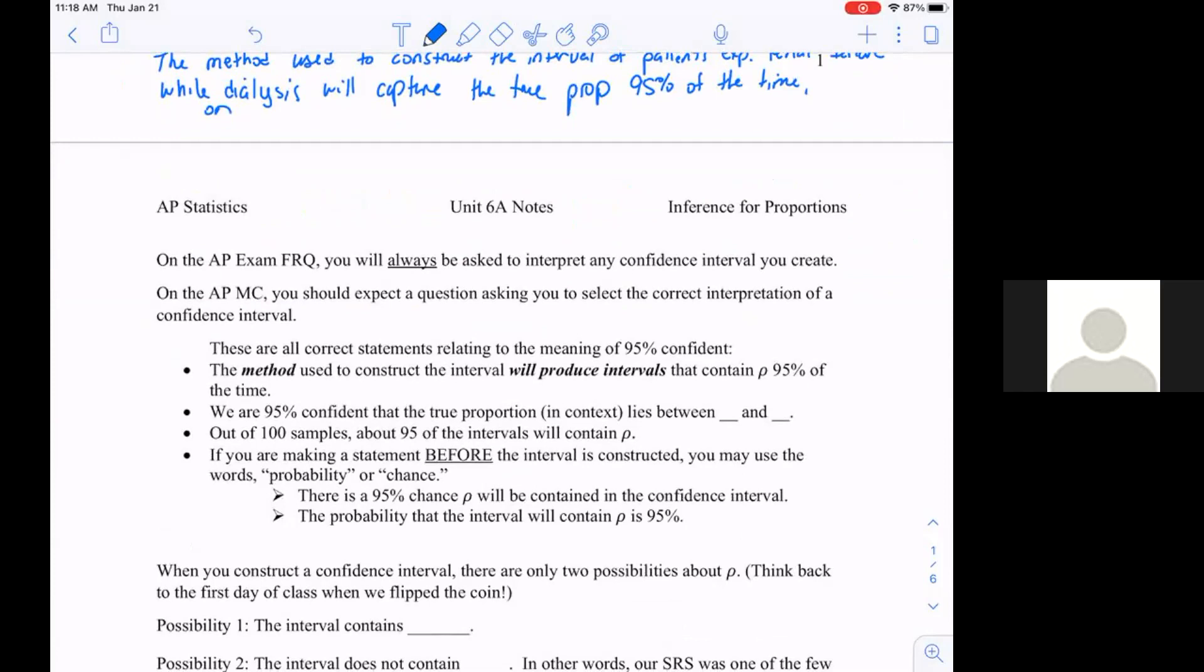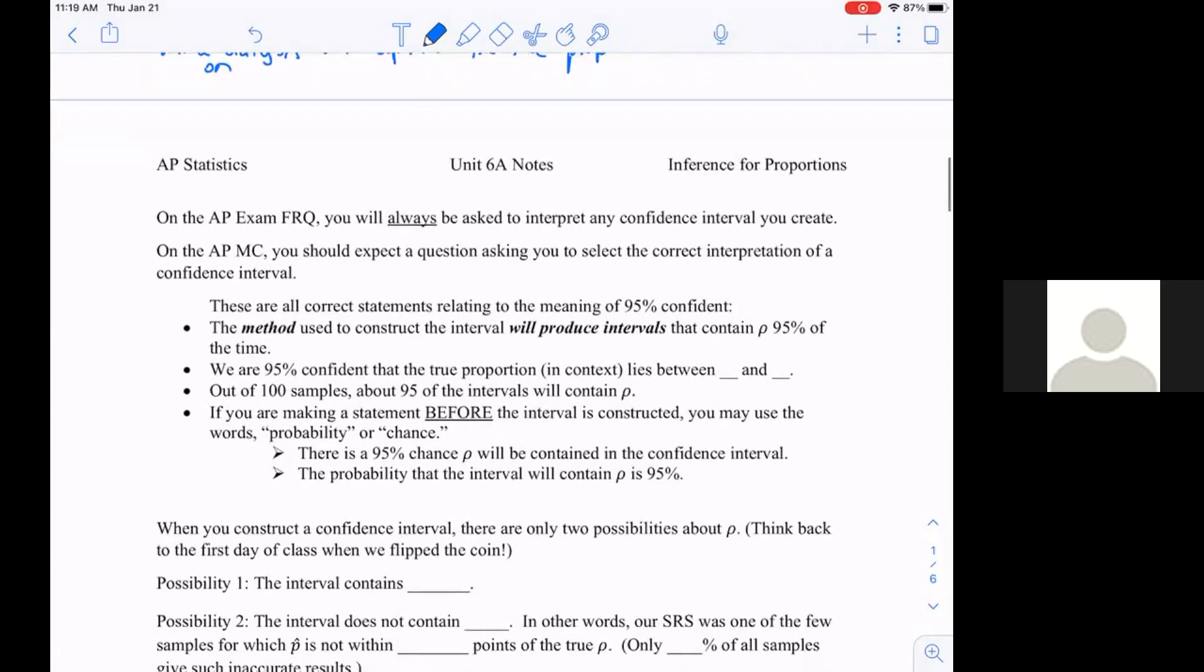On your AP exam, you will always be asked to interpret any confidence interval you create. It's going to ask you to estimate the given proportion of people that prefer Papa John's over Papa Murphy's. We would create that interval but then we're going to be asked to interpret what we found.